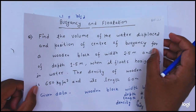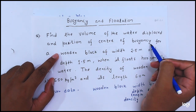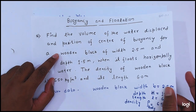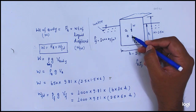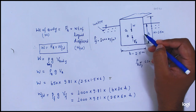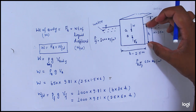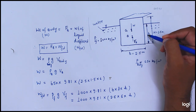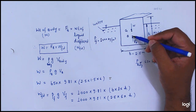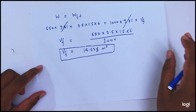Now we have to find the position of the center of buoyancy. The position of center of buoyancy is equal to half of the submerged depth, that is h by 2. The total height is capital H and the small h is the depth submerged in the liquid. So the center of buoyancy is equal to small h by 2.